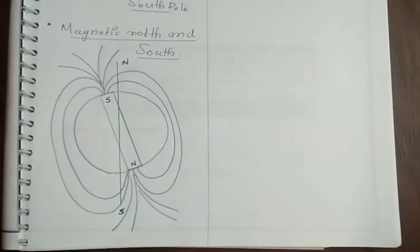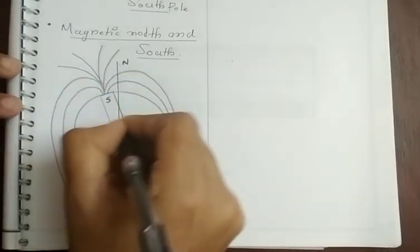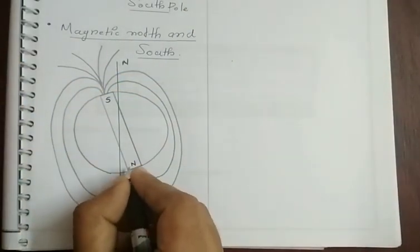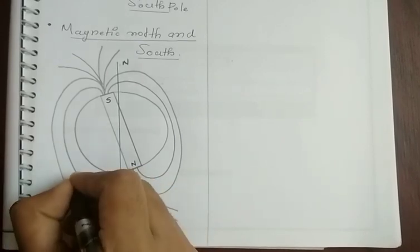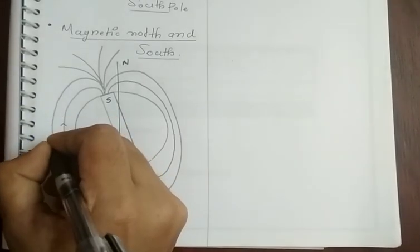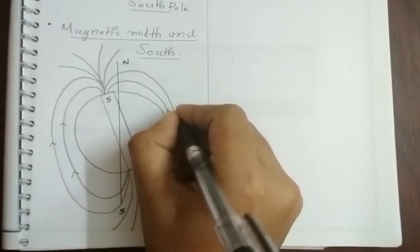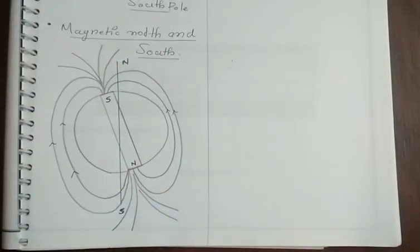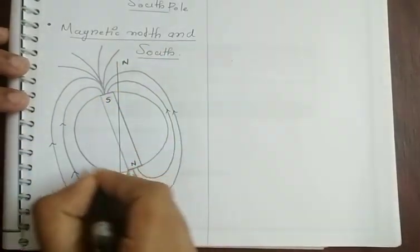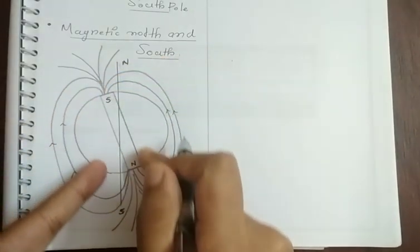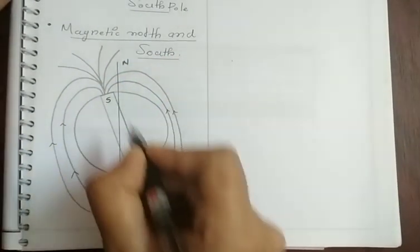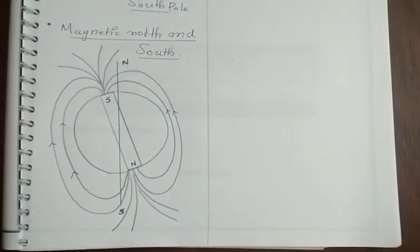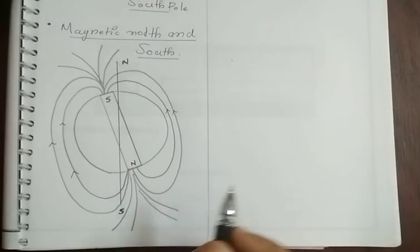If we look at the magnetic field lines of the earth, the magnetic field lines will be directed from north to south outside, and from south to north inside. This is the magnetic alignment of the earth — this is the magnetic south pole, this is the magnetic north pole, and these are the magnetic field lines of the earth, which is exactly similar to the behavior of a bar magnet.